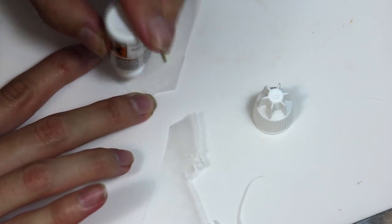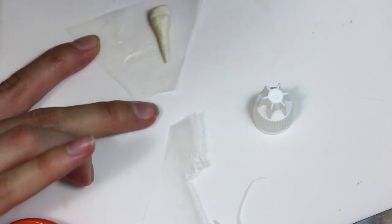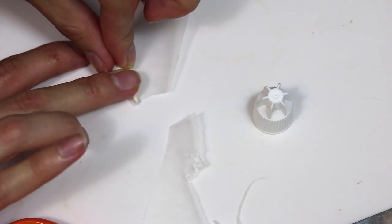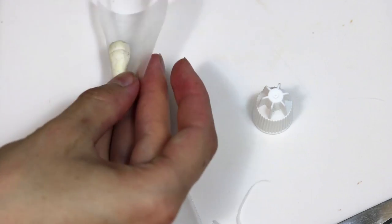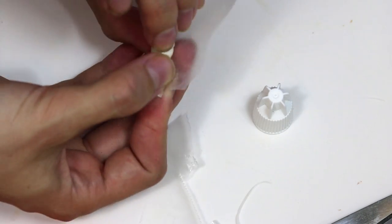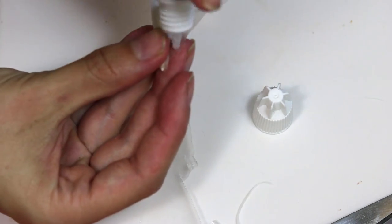From there, add some glue—any type you have—and secure it to the wax paper. Wrap that around and add a little bit more glue to close it off.